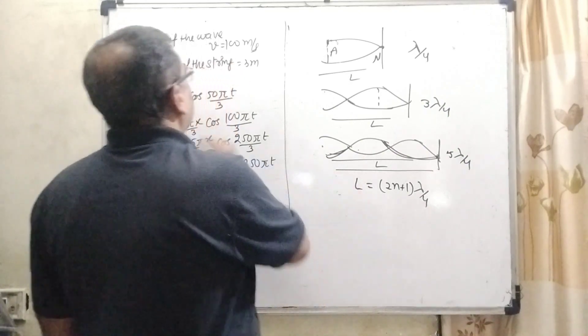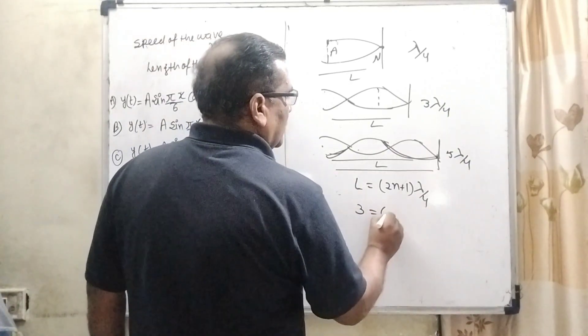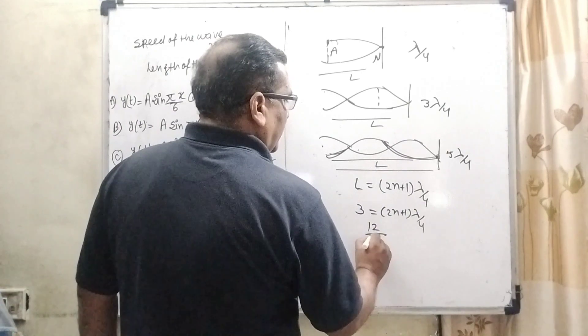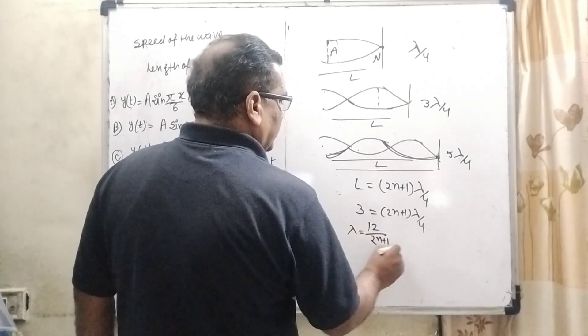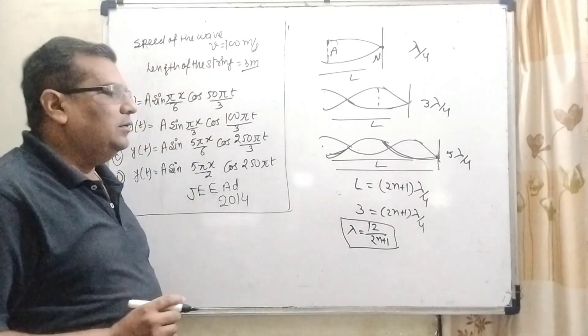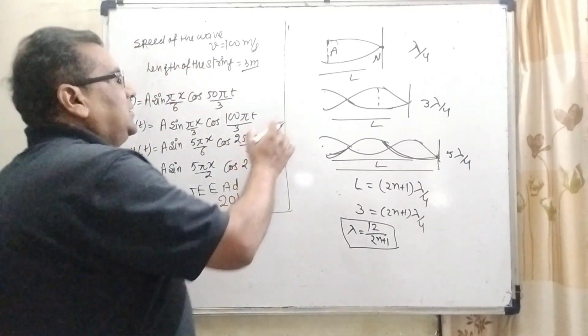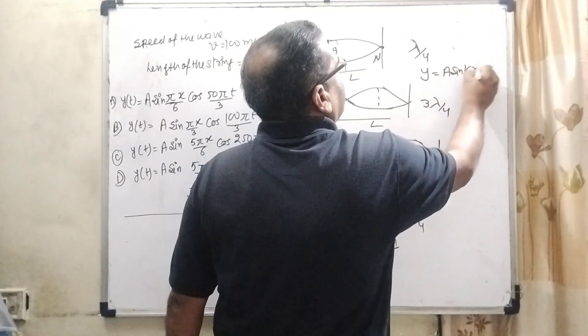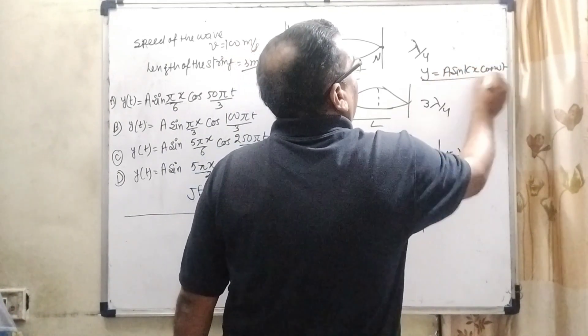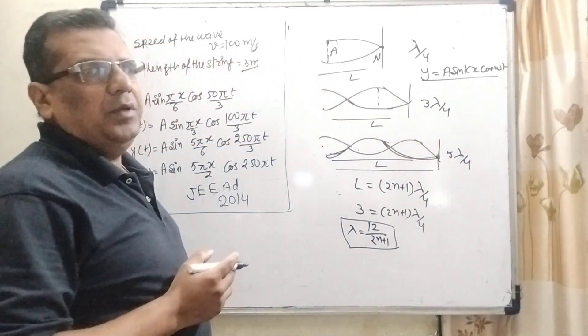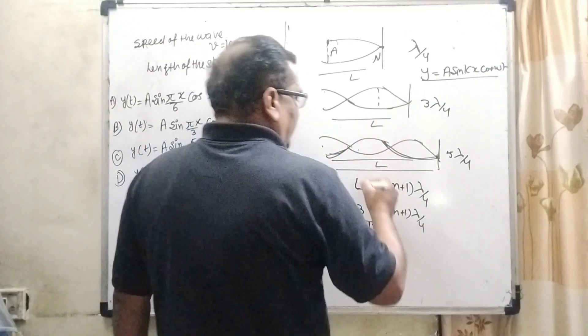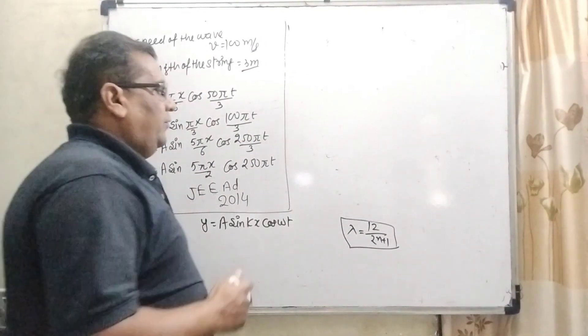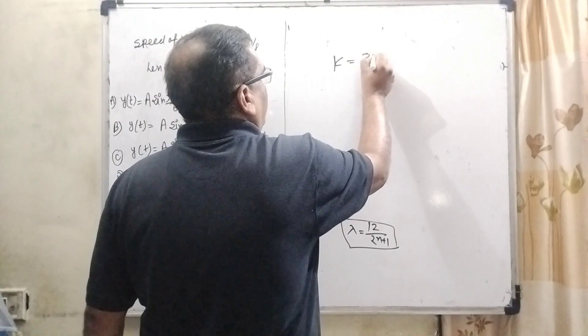Here l is given in the problem, that is 3 meter. So 3 equal to 2n plus 1 lambda by 4. Here 4 times 3 is 12 upon 2n plus 1 equal to lambda. Here we get lambda equal to 12 upon 2n plus 1. And what is the equation of this rigid boundary? That is y equal to a sin kx cos omega t. Here a is amplitude, k is wave constant, and omega is angular frequency. Here we have to find k and omega.